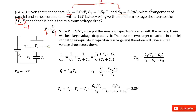The problem requires an arrangement of both parallel and series connections, so one capacitor must be in series. We choose C2 for the series connection. So the final arrangement is: C1 and C3 in parallel, and C2 in series. This satisfies the requirement.